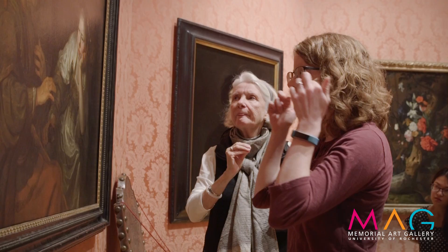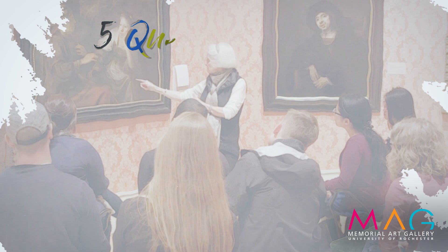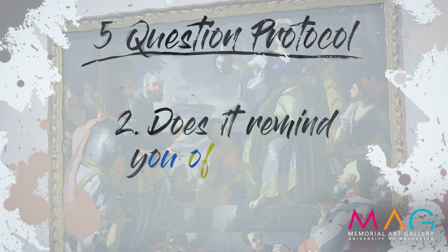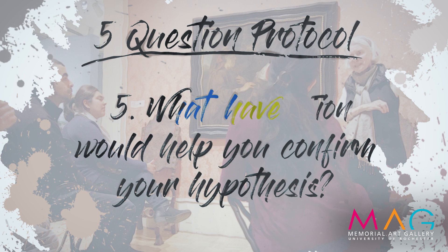She has a white band across her forehead at her hairline. The five questions are: What do you see? Does it remind you of anything? What's the story here? What information would help you confirm your hypothesis? And what have you learned about yourself as an observer in this process?